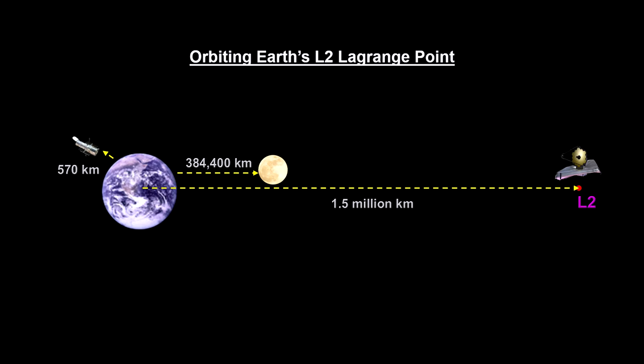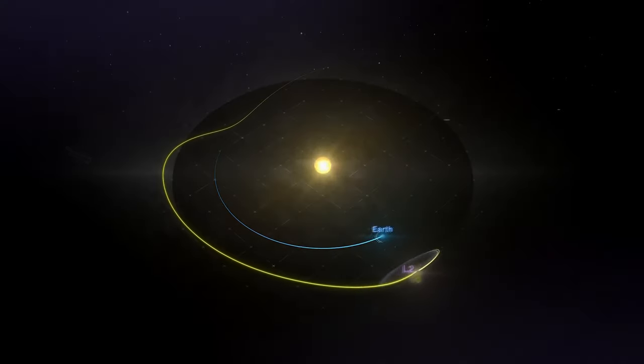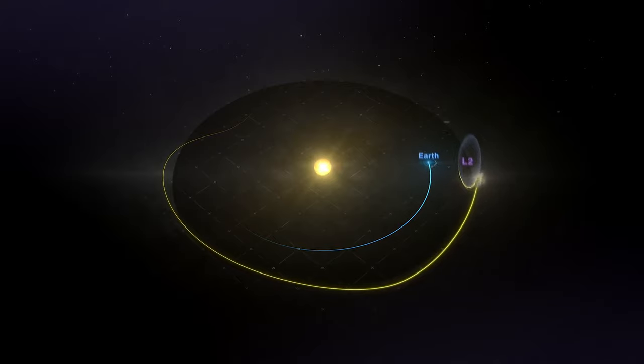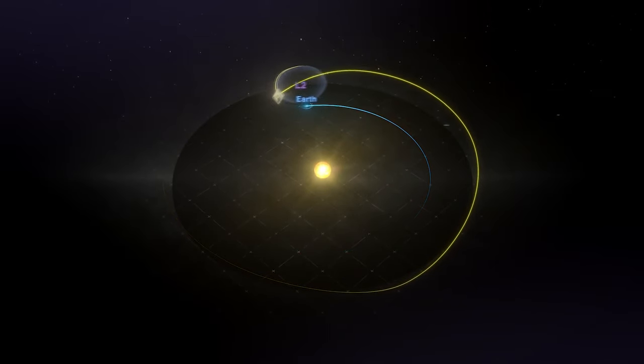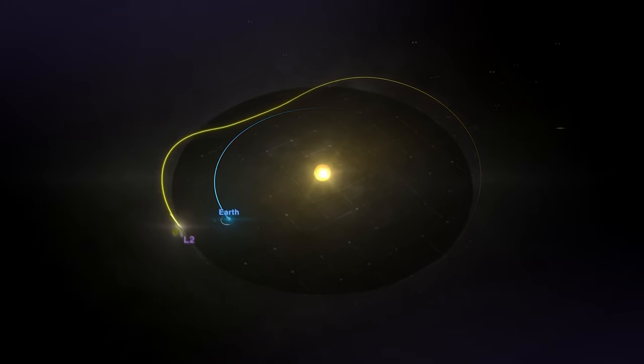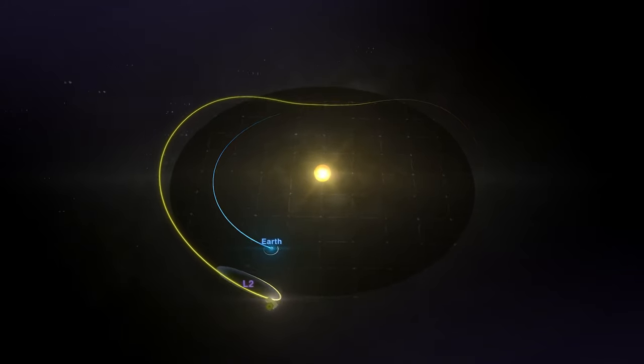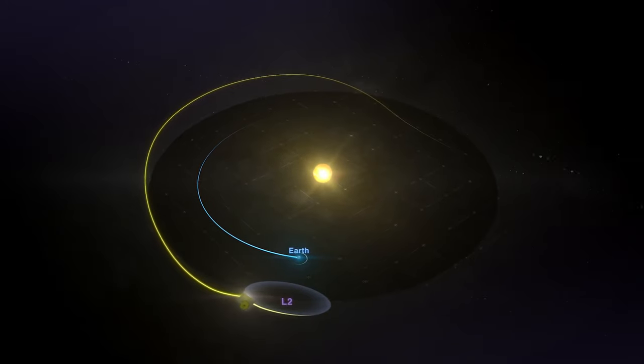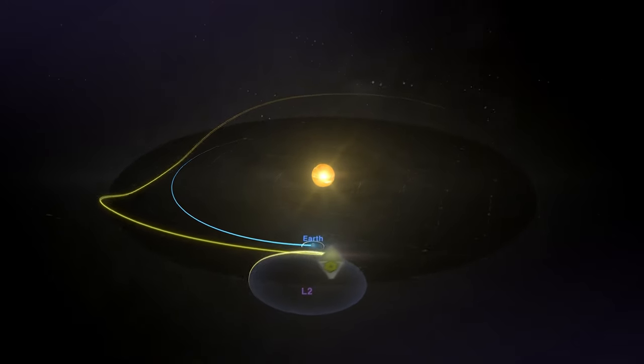You'll recall from our coverage of Lagrange points in our How Far Away is It segment on the solar system, that objects can, with a little assist, orbit L2. This animation shows how this will work. To remain in orbit around L2, Webb will have to periodically burn small amounts of fuel. This puts a time limit on the usefulness of the telescope at around 10 years.